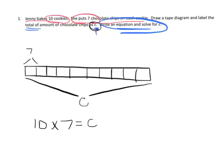And if I wanted to multiply, I would, and I'd go C is equal to 70. So technically, the answer is 70 chocolate chips.